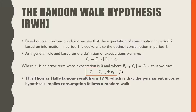Thus, we have our consumption in period t equal to the consumption in period t minus 1 plus this error term. This is Thomas Hall's famous result from 1978, which states that the permanent income hypothesis implies consumption follows a random walk.